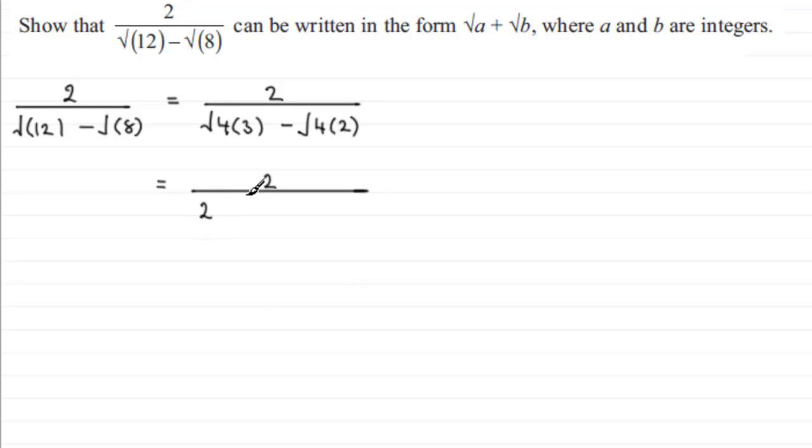As for the square root of 3, I'm just going to leave that as root 3 because I don't know its exact value. And then for the square root of 4, that's going to be 2 multiplied by root 2, because again I don't know the exact value of root 2.